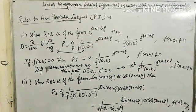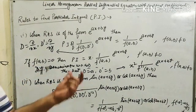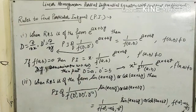Then the condition will give x squared times 1 upon f double dash (a, b) times e raised to power ax plus by, providing f double dash (a, b) is not equal to 0. This process continues until a non-zero constant term arises.